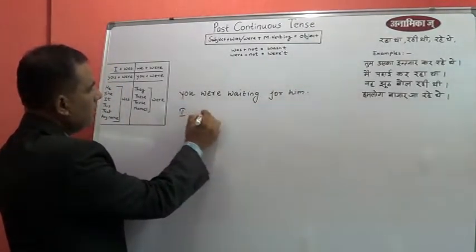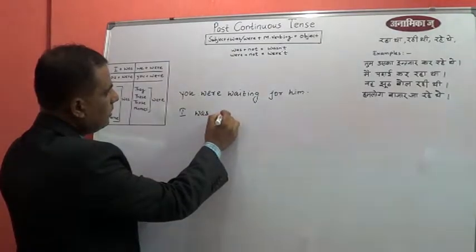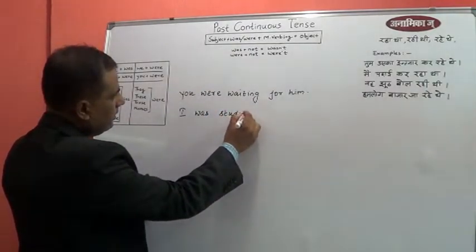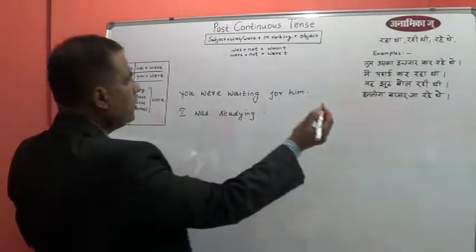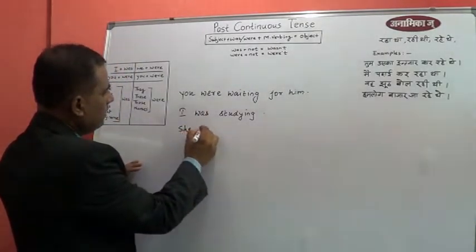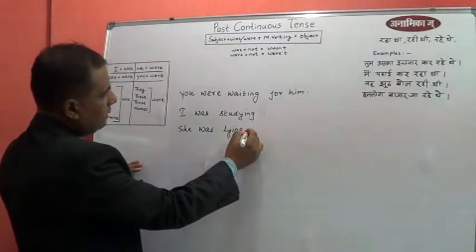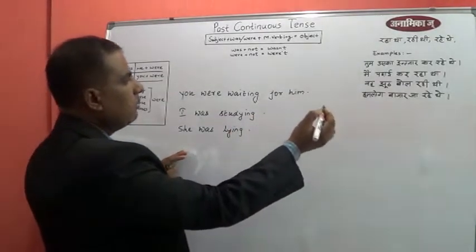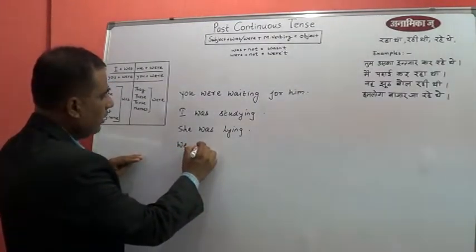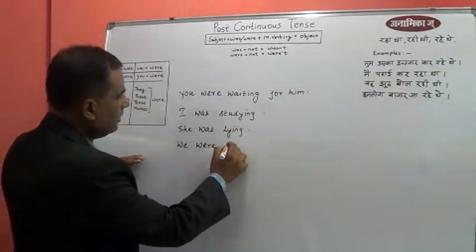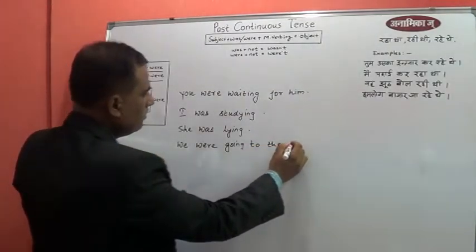So here the subject comes first, then 'were', then the verb with -ing. Similarly the second sentence: 'main padhai kar raha tha' — 'I', so instead of 'were', 'was' will come — 'I was studying'. Similarly 'woh lait rahi thi' — again 'was' will come — 'she was lying'. 'Hum log bazar ja rahe the' — now 'we' has come, so as per the formula 'were' will come — 'we were going to the market'.